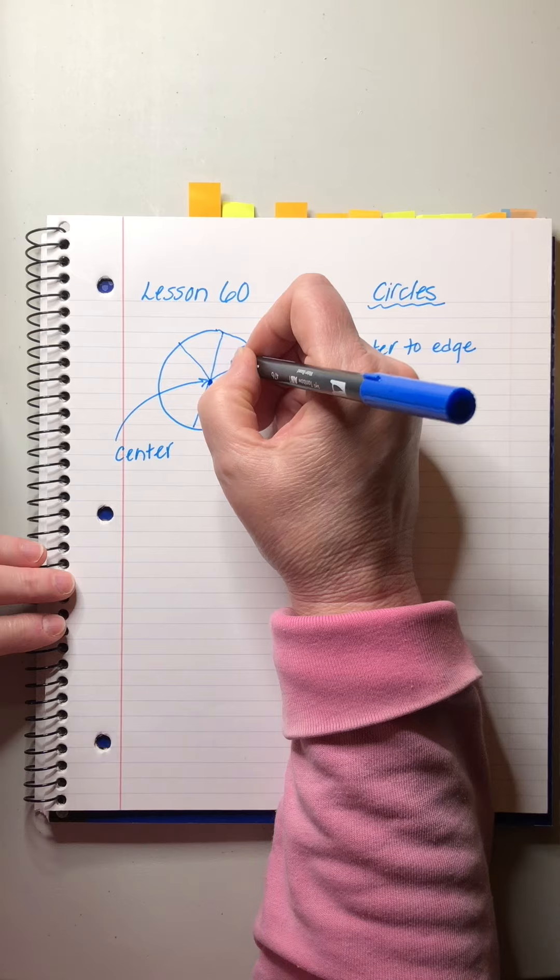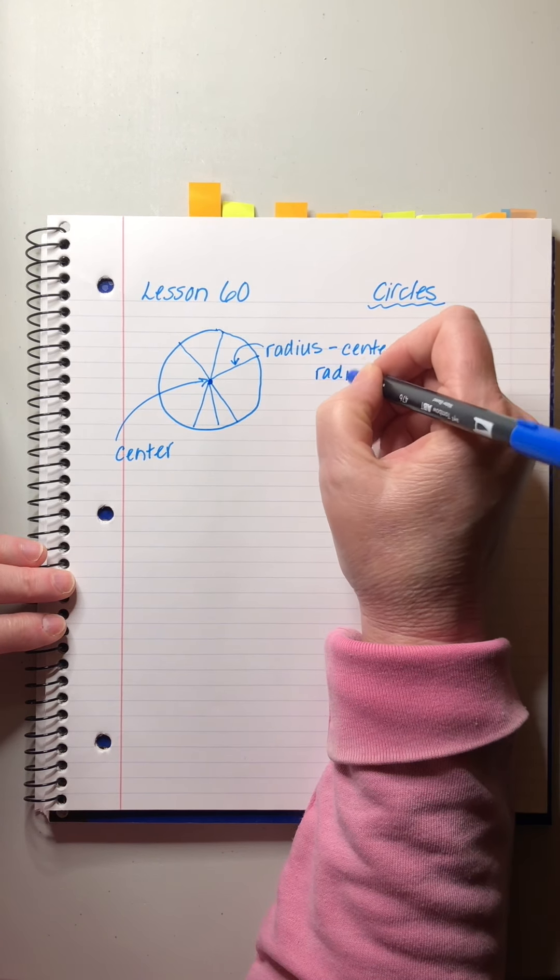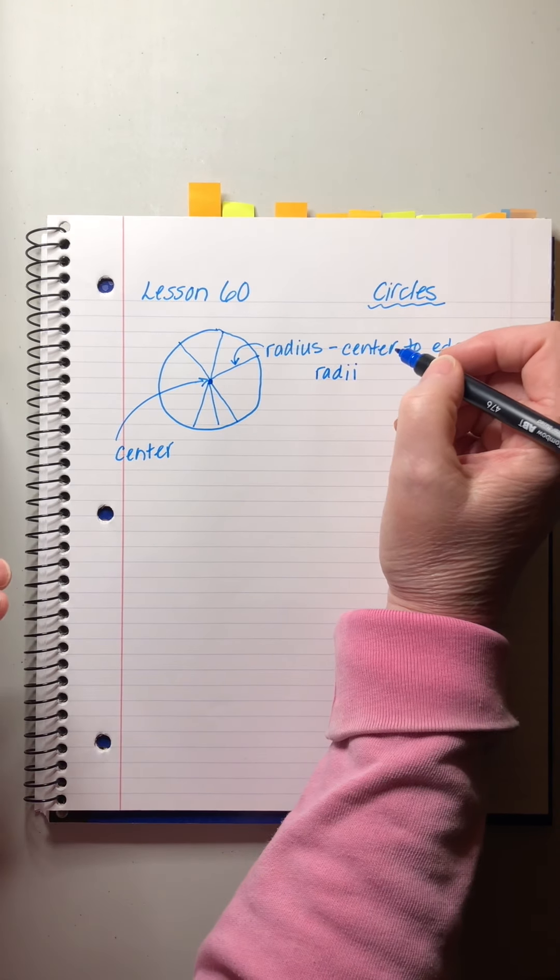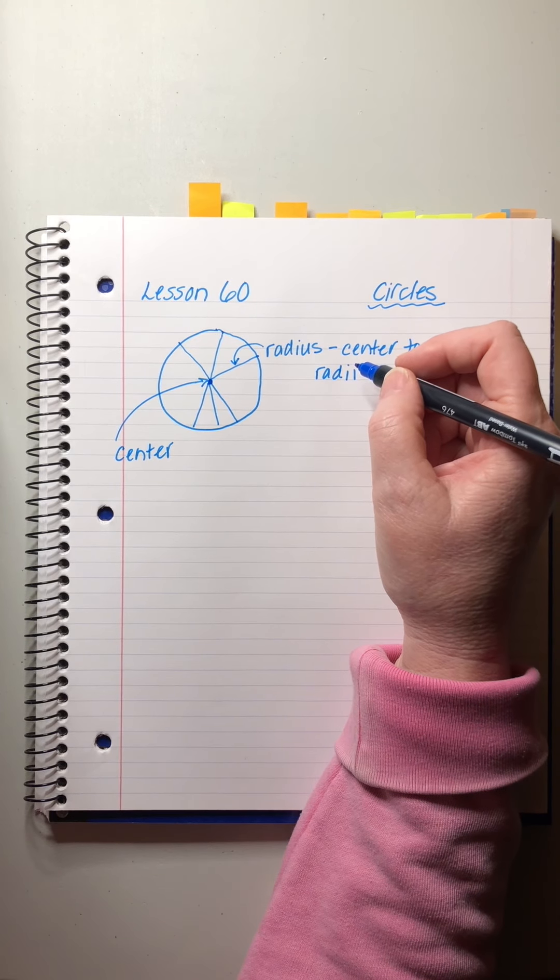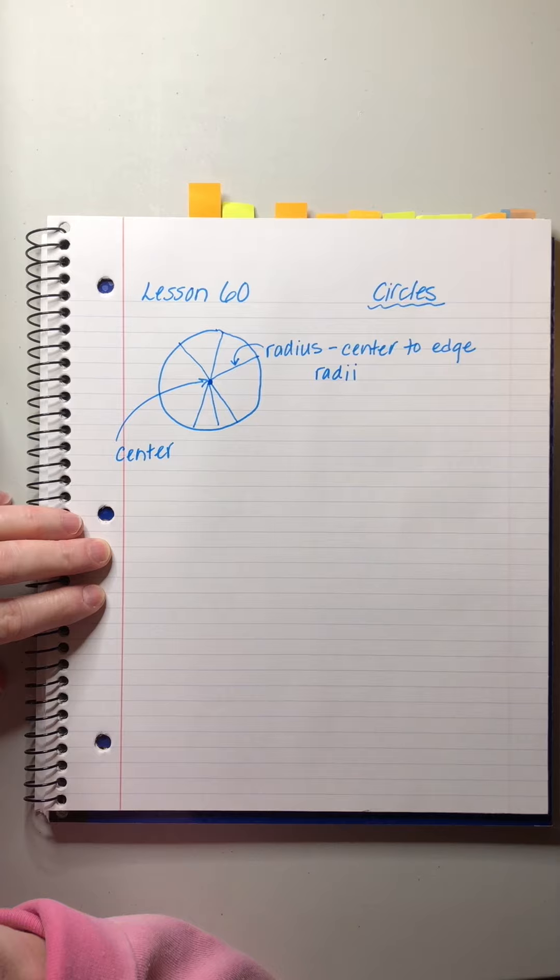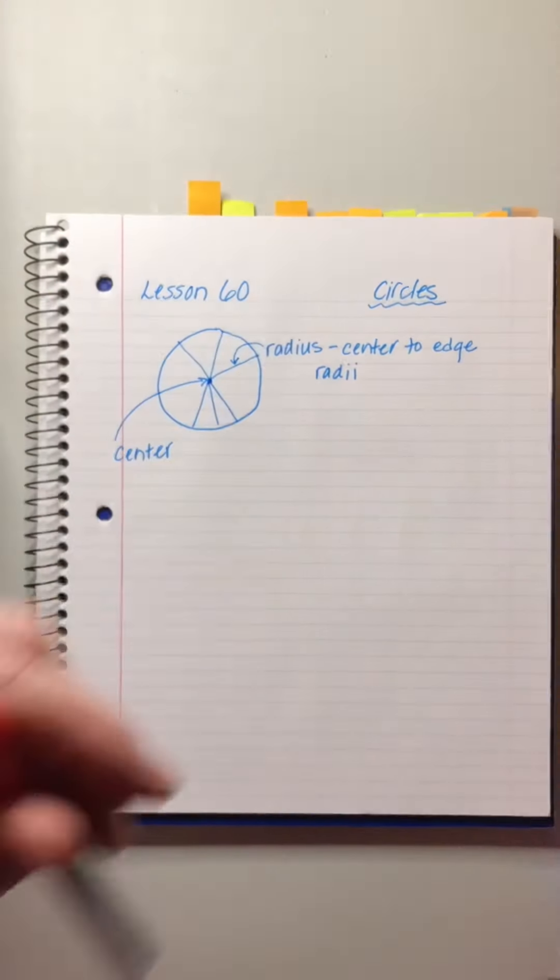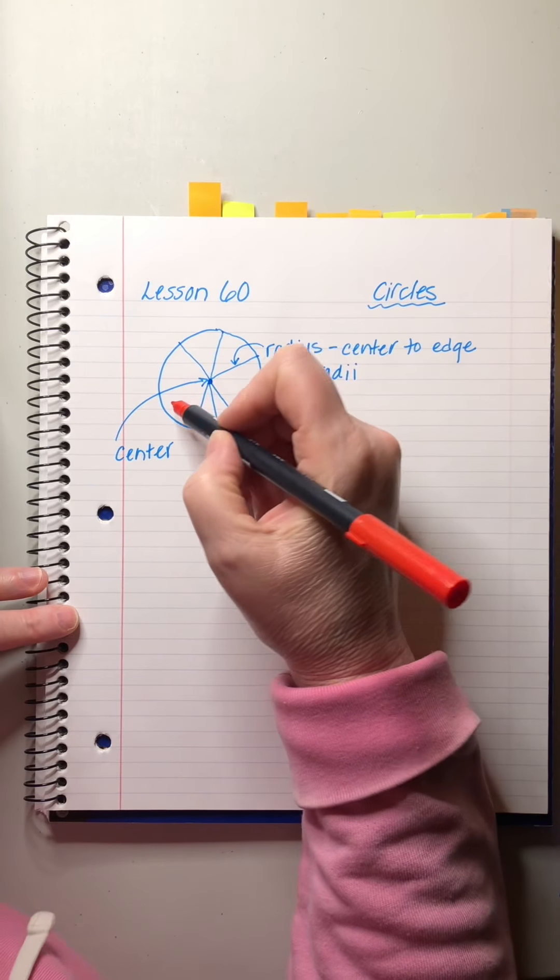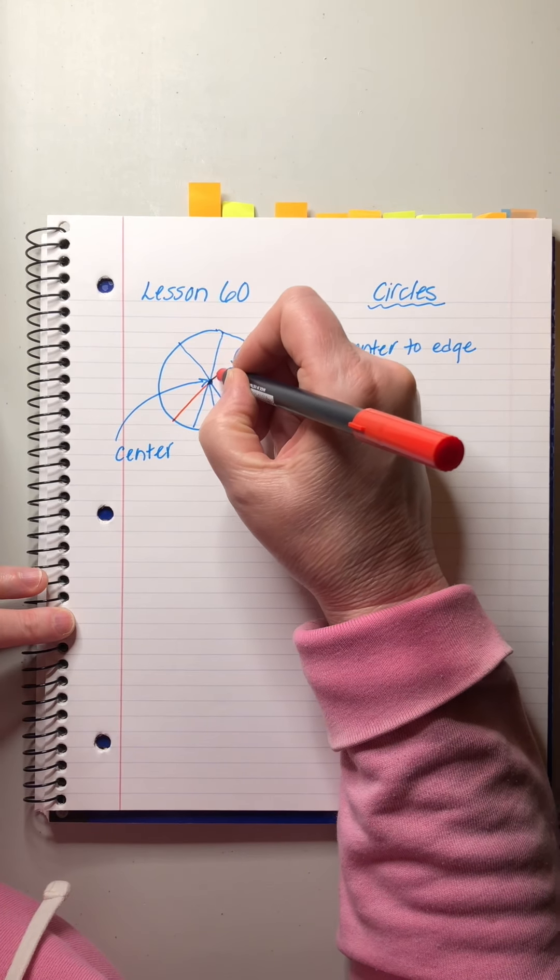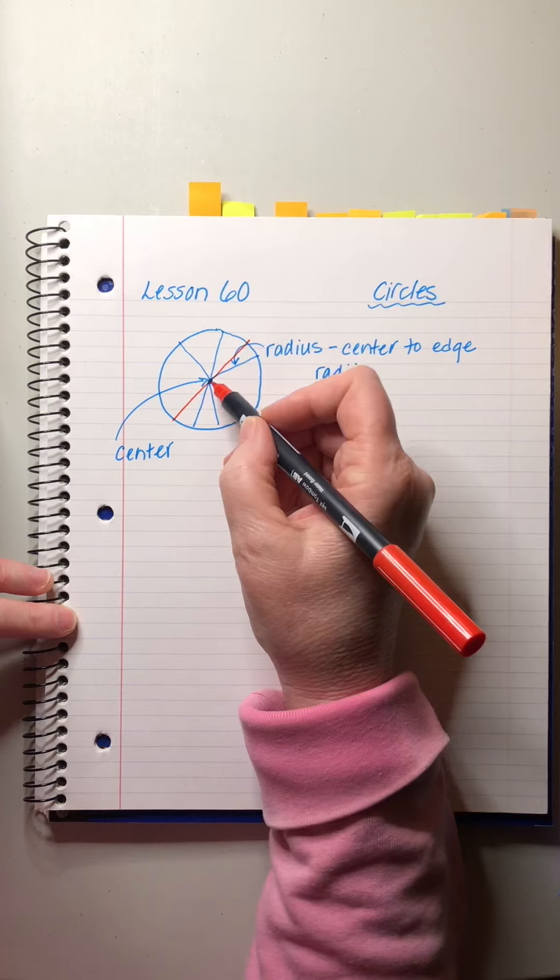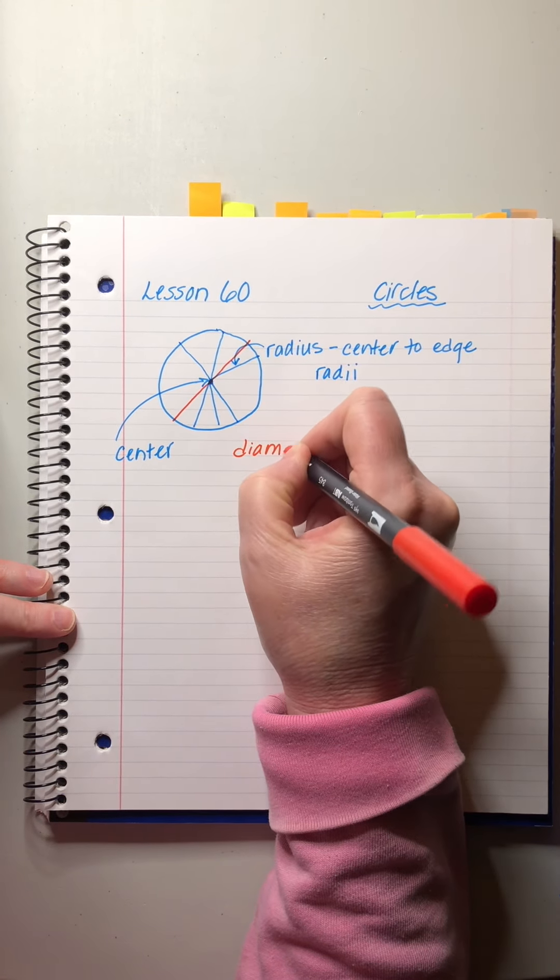So that is what the radius is, and the plural of radius is radii. I think that's how you spell it. So that's a little weird, but we don't say radiuses. Okay, now if you want to create—I'm going to use a different color so it's easier to see—if you want to take a pair of radii and connect them so that they form a straight line that goes through the center and all the way across, that's called a diameter.